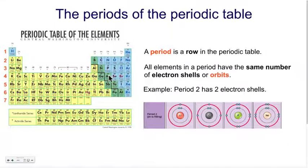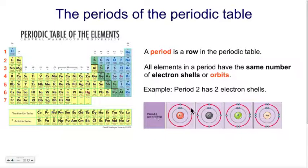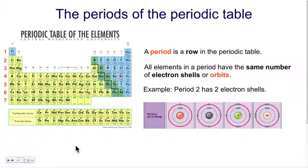So if we look at row number two, that contains lithium, beryllium, boron, carbon, nitrogen, oxygen, fluorine, and neon. All of these being in row number two means that they all have two energy levels. We have drawings of lithium — lithium has two energy levels. Carbon has two energy levels as expected. So does fluorine and so does neon. So the row number gives us the number of orbits for a given atom.